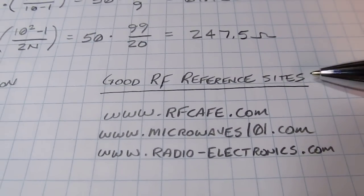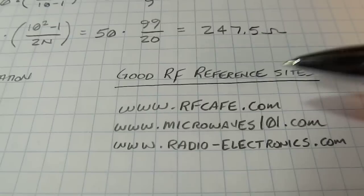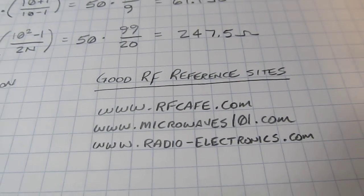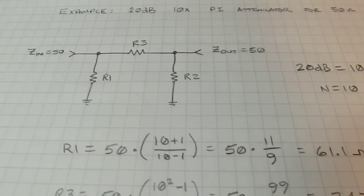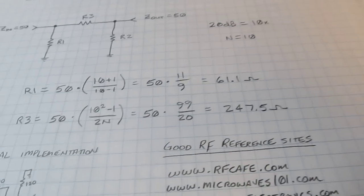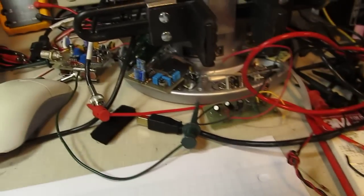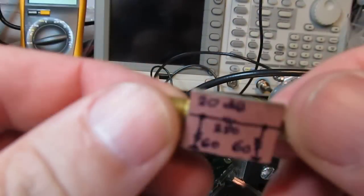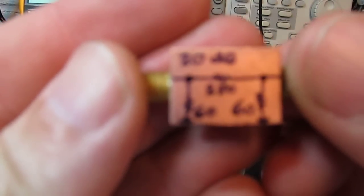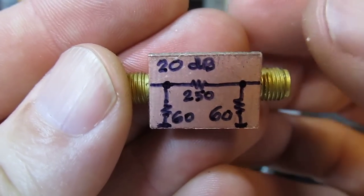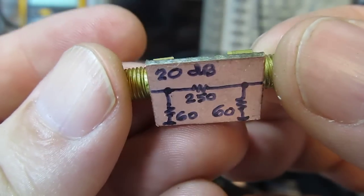A couple of quick little things I'll point out here - a couple of good reference sites for RF circuits like this: RFcafe.com, microwaves101.com, and radio-electronics.com. Lots of calculators where if you want to design one of these attenuators, you can just put in the values and it will calculate for you. So let's show you how I built this and we'll go test it real quick. I'm going to see if I can get the camera here on the tripod, hopefully it's not too noisy when I connect it up here. Here's what I built.